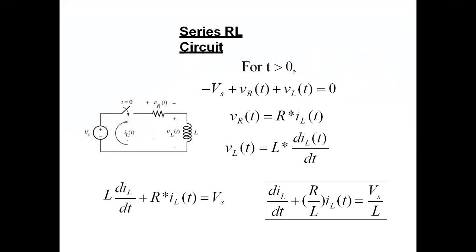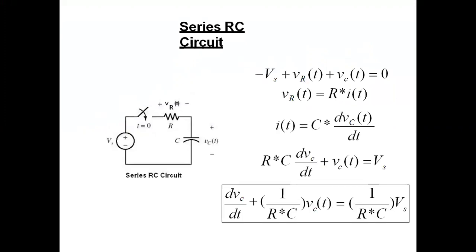So the first order differential equation for the RL circuit is: (d/dt)iL + (R/L)·iL = Vs/L, using KVL. For the series RC circuit, when the switch is closed: Vs − Vr − Vc = 0. Substituting Vr = R·i(t) and i(t) = C·(dVc/dt), we get RC·(dVc/dt) + Vc = Vs, or (dVc/dt) + (1/RC)·Vc = (1/RC)·Vs — the first order differential equation for Vc.